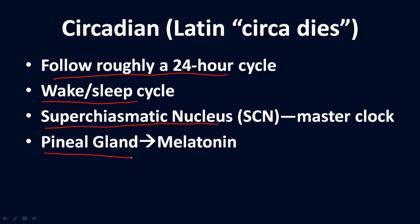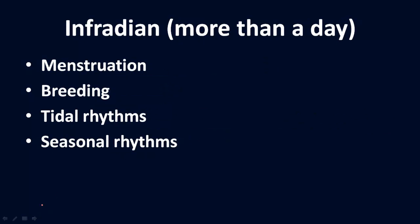Related connections are the pineal gland and the release of the hormone melatonin. Then there are infradian rhythms — more than a day, or longer than a day. The best examples for humans are menstruation, but it can also include breeding cycles, tidal rhythms, and seasonal rhythms when you get outside the realm of human beings, especially with mammalian species.